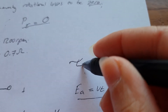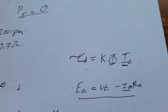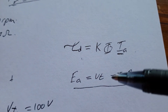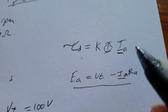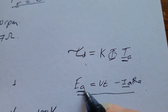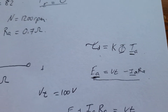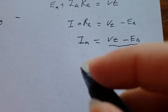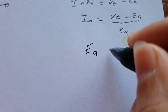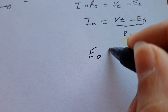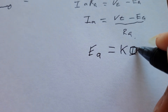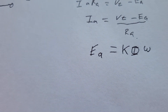We can use these two formulas and find our torque developed. As you can see, we basically have everything we need except we don't have IA and we don't have EA. But we're lucky that we have another formula for EA that will work very well and it's quite easy. So EA equals K times phi times omega.